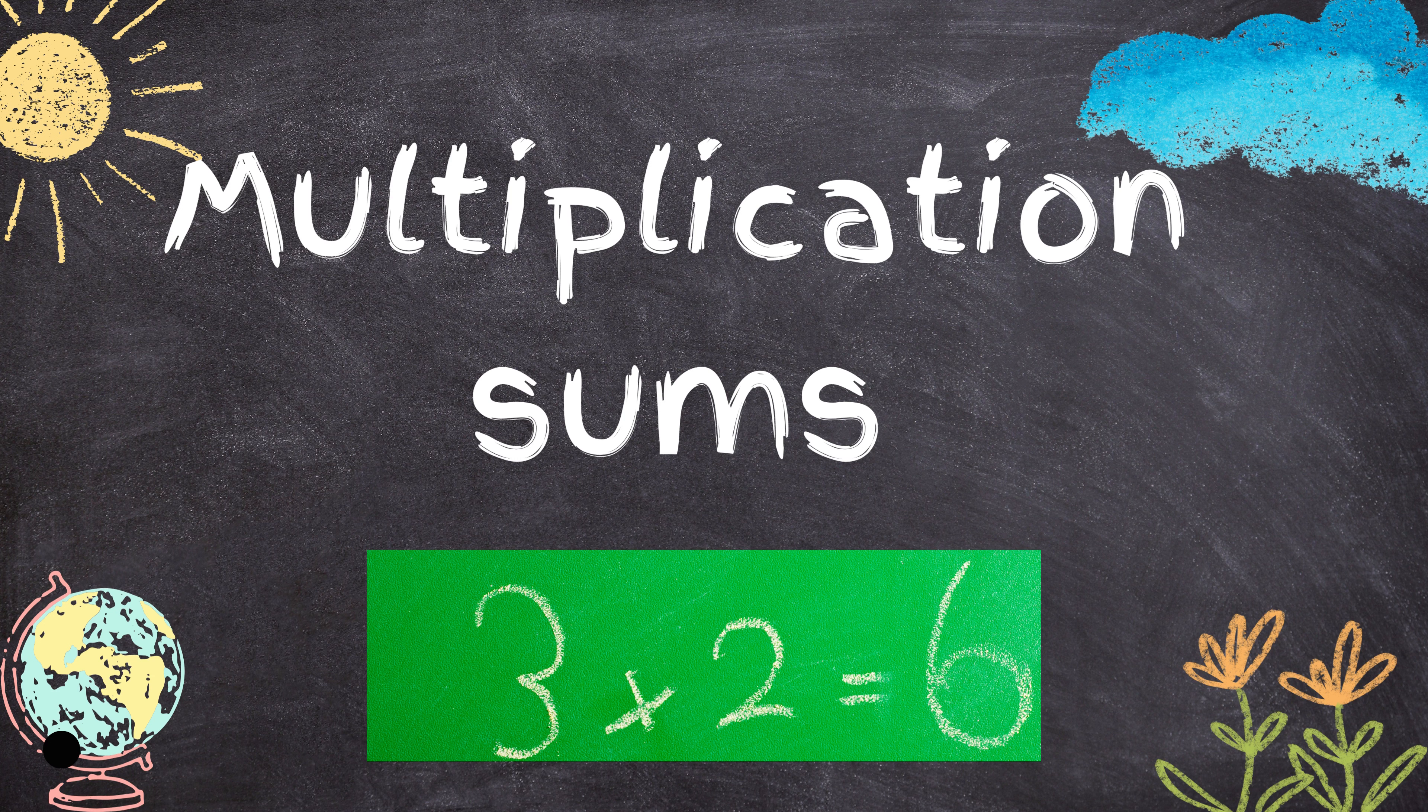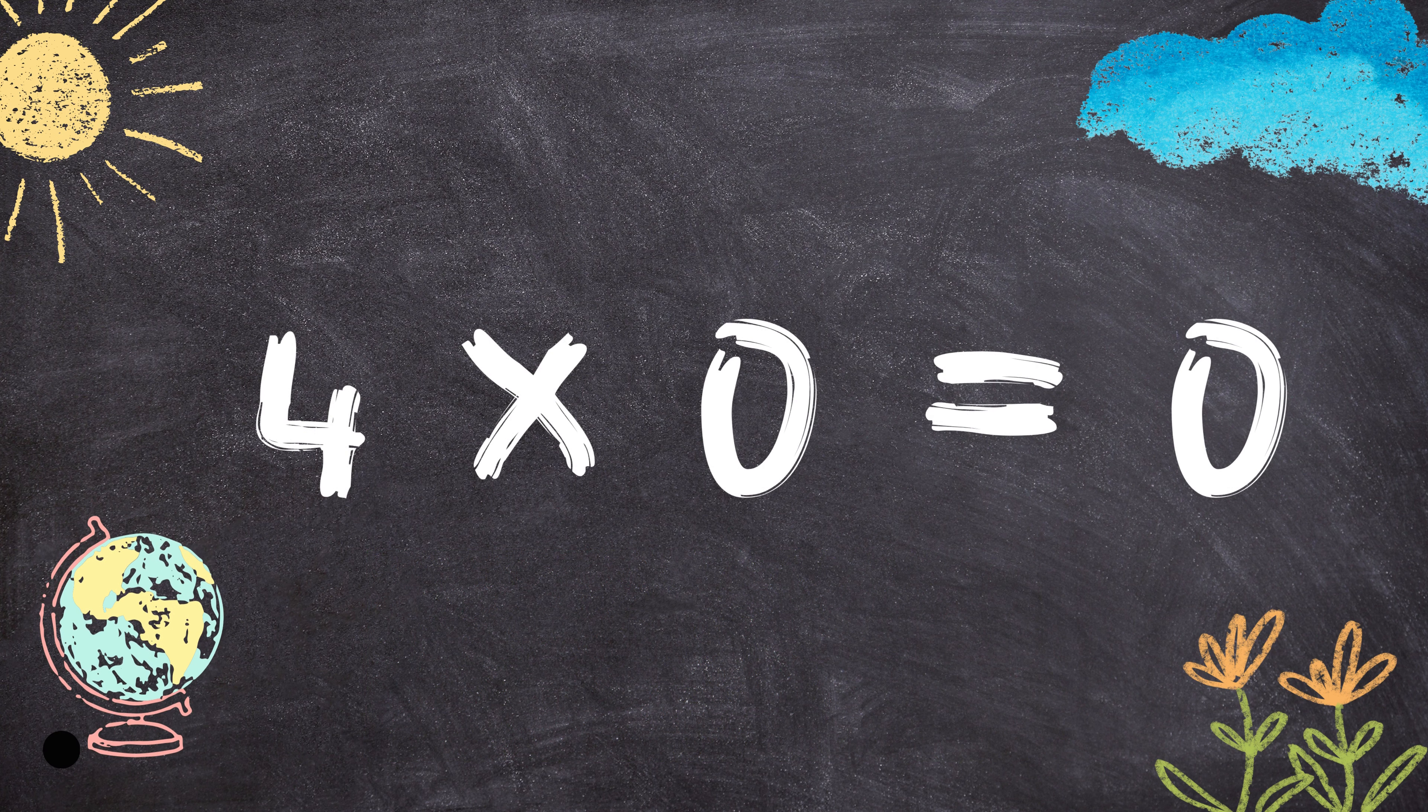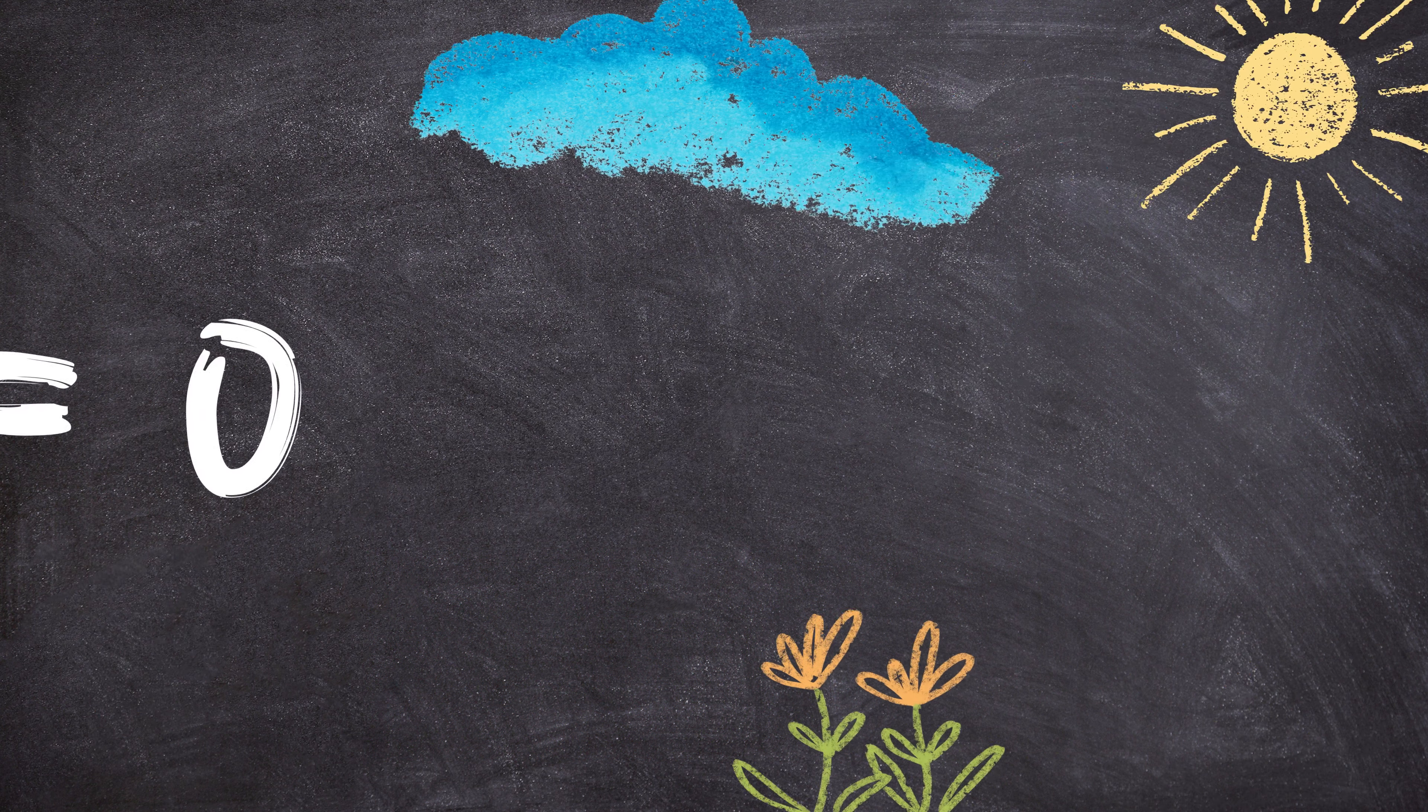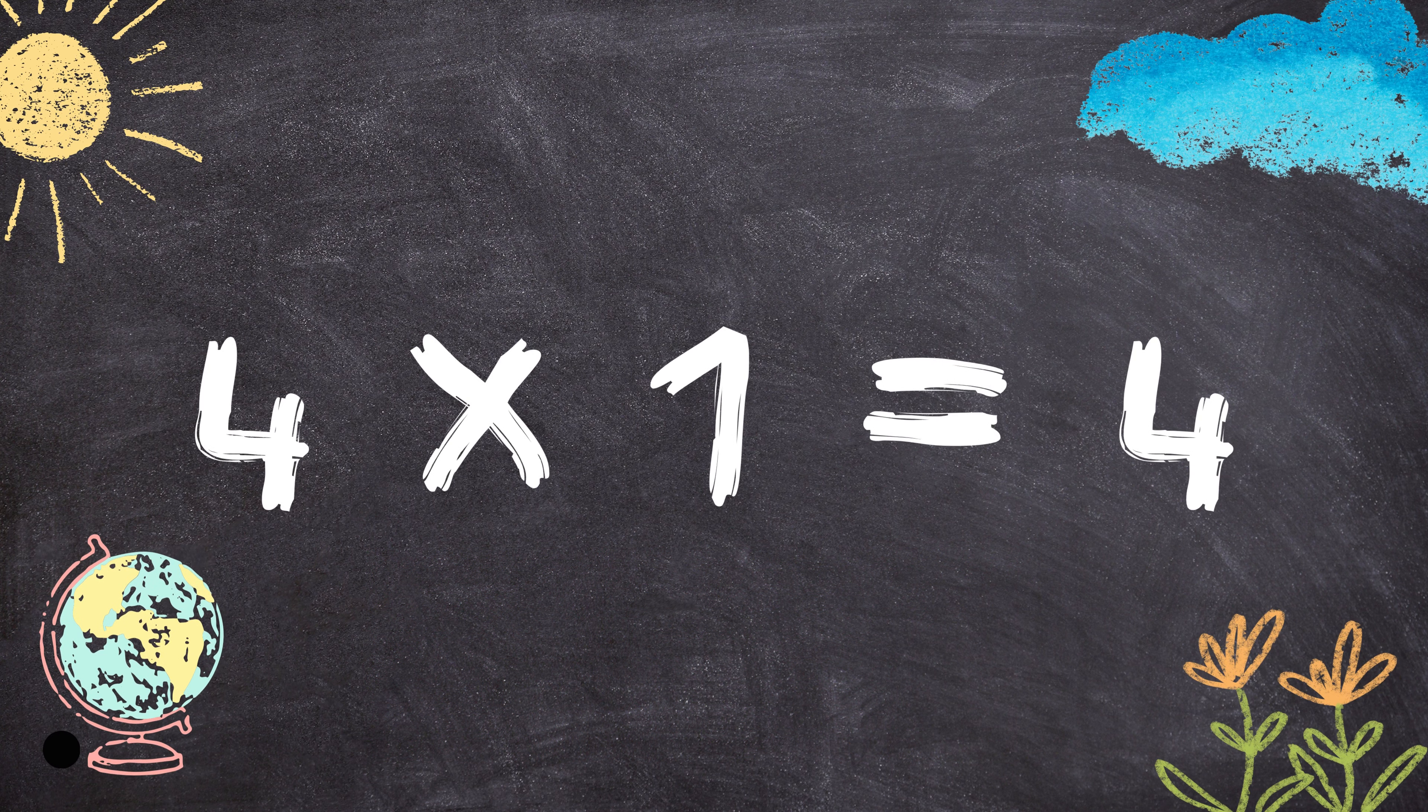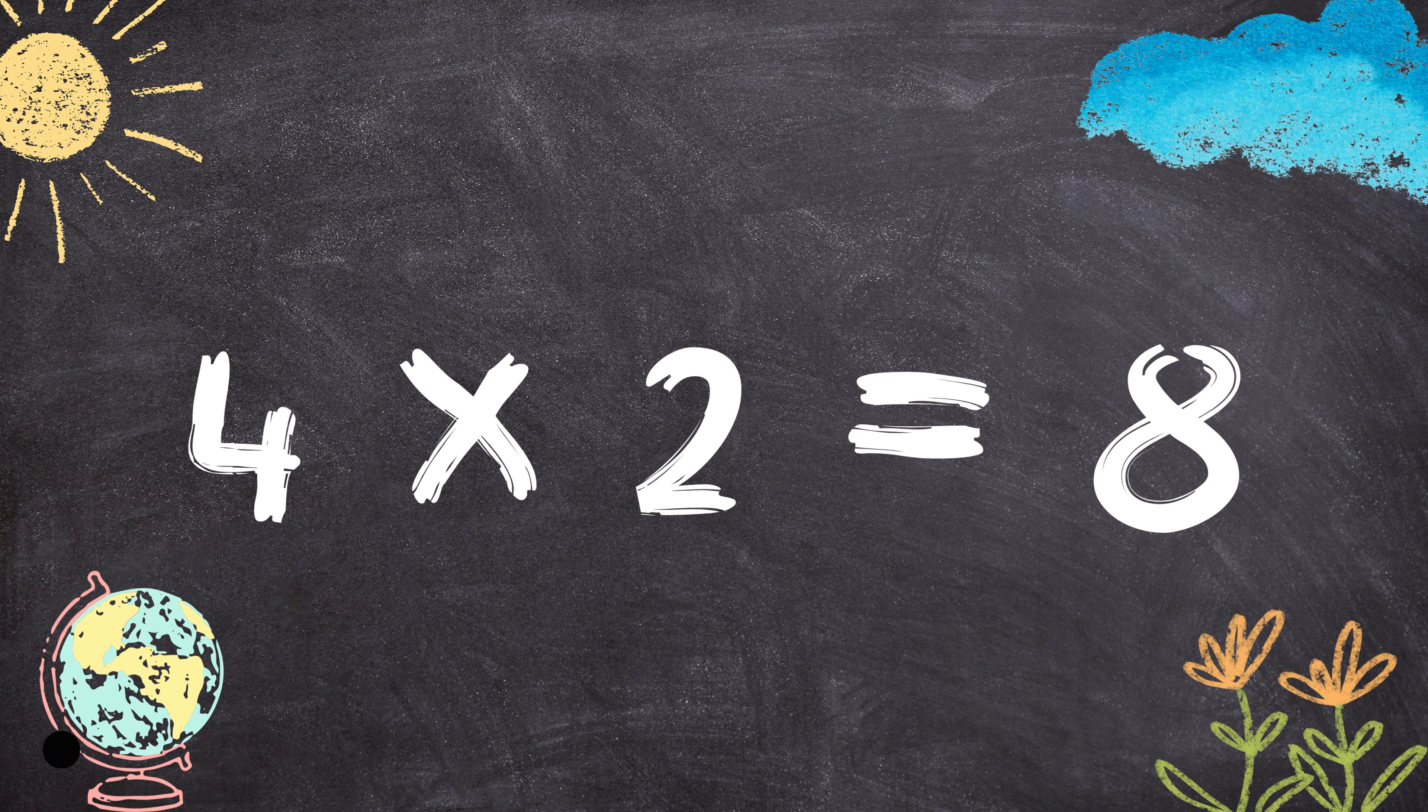4 times multiplication equations. 4 times 0 equals 0. 4 times 1 equals 4. 4 times 2 equals 8.